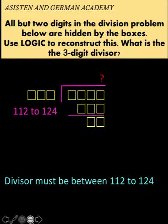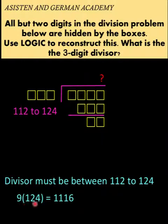If this digit is nine, nine times 124 is 1,116, which is a four-digit number. But we want a three-digit number. So nine could not be this question mark if we take the upper limit of our divisor.